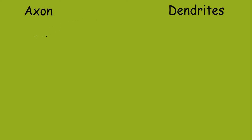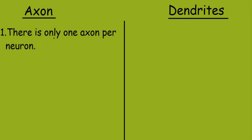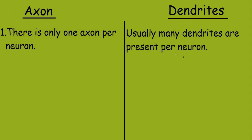Let's study the differences between axon and dendrites. The first point: there is one axon per neuron, while usually many dendrites are present per neuron.